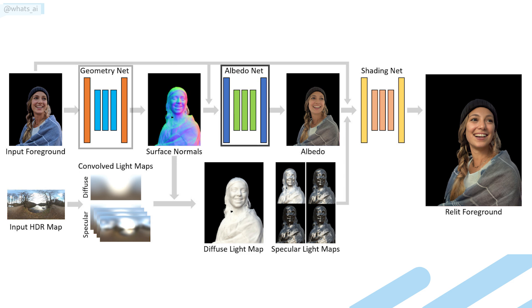A geometry net, an albedo net, and a shading net. The geometry net takes the input foreground reproduced on the paper step to produce surface normals. This is a modelization of the person's surface so that the model can understand the depth and light interactions. Then, this surface normal is coupled with the same foreground image and sent into an albedo net that produces the albedo image.